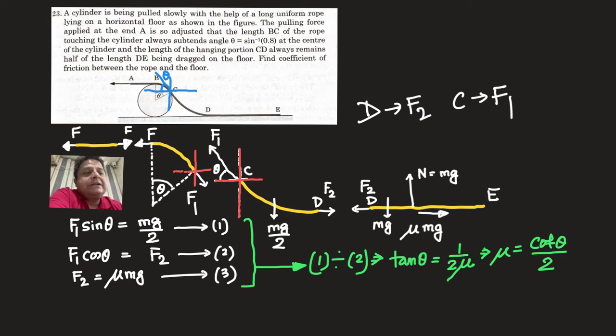So equation one here, you get, say tension at C is F₁ that makes angle theta with horizontal and tension at D is F₂ that is horizontal. Now F₁ sin theta, that means the vertical component of F₁ is F₁ sin theta here. I have not shown here, so that's the vertical component of F₁ and this is the horizontal component of F₁.